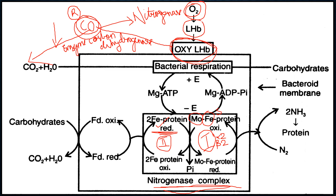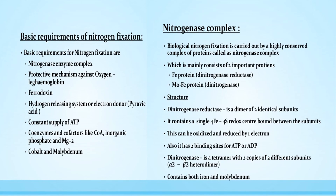When they receive the signal, these components get activated, protein production begins, and they ultimately help with the conversion of nitrogen to ammonia. To summarize: the basic components of nitrogen fixation are the nitrogenase enzyme complex; the protective mechanism against oxygen is leghemoglobin; ferredoxin forms components one and two; and there is a constant supply of ATPs driving the fixation.